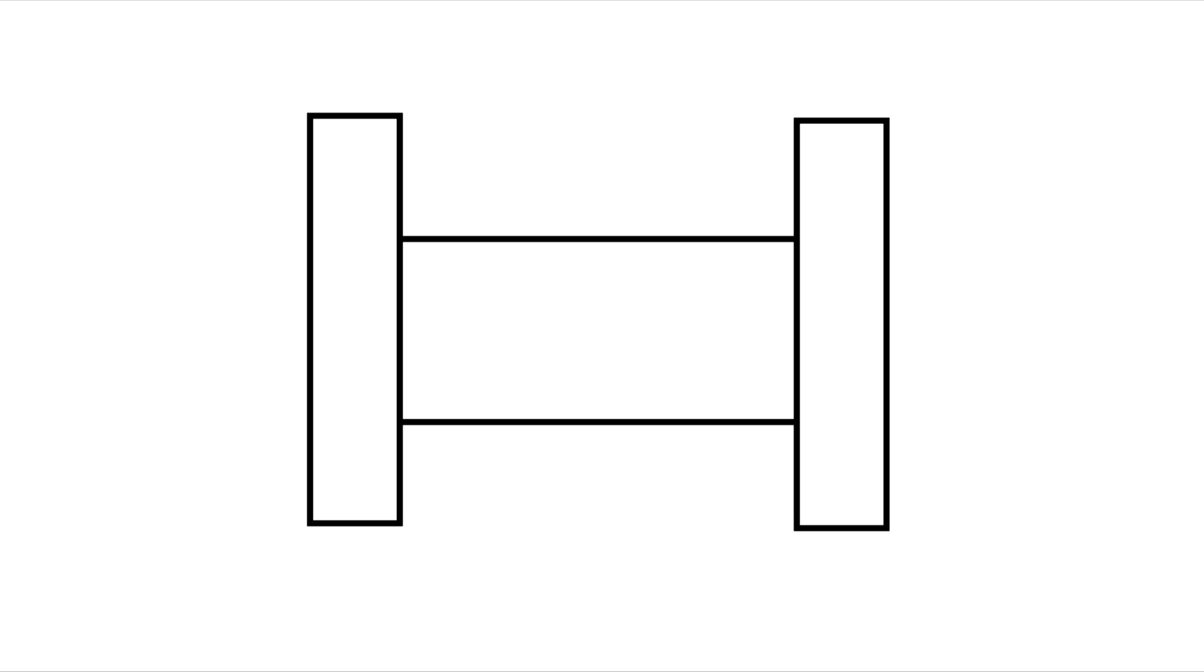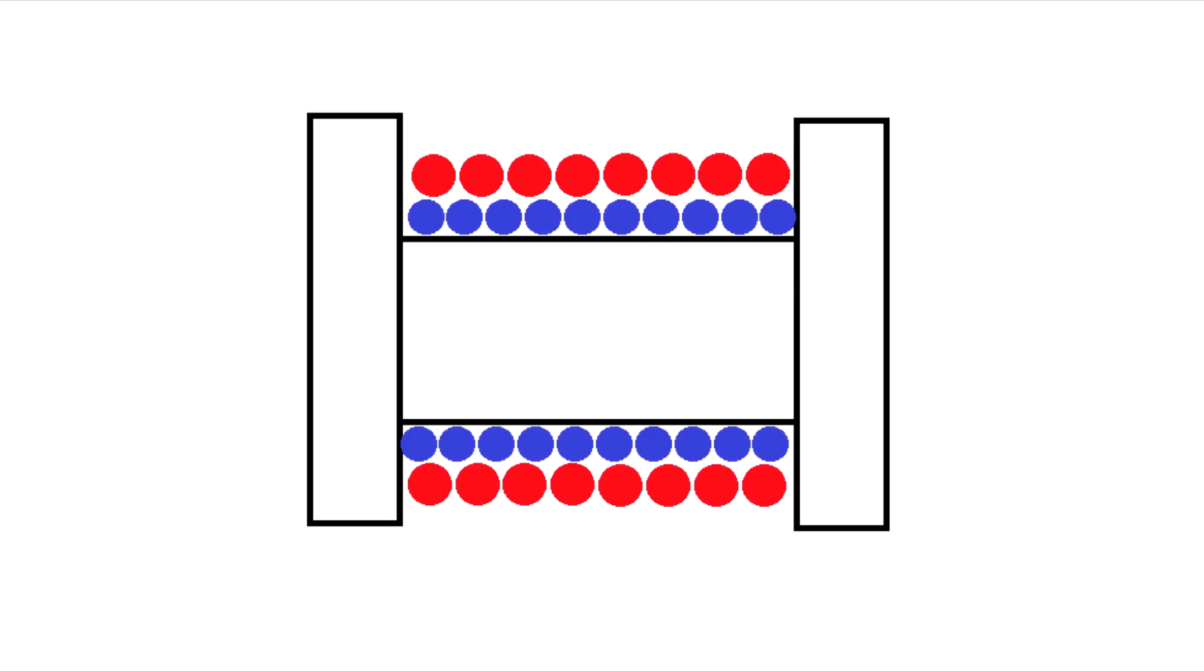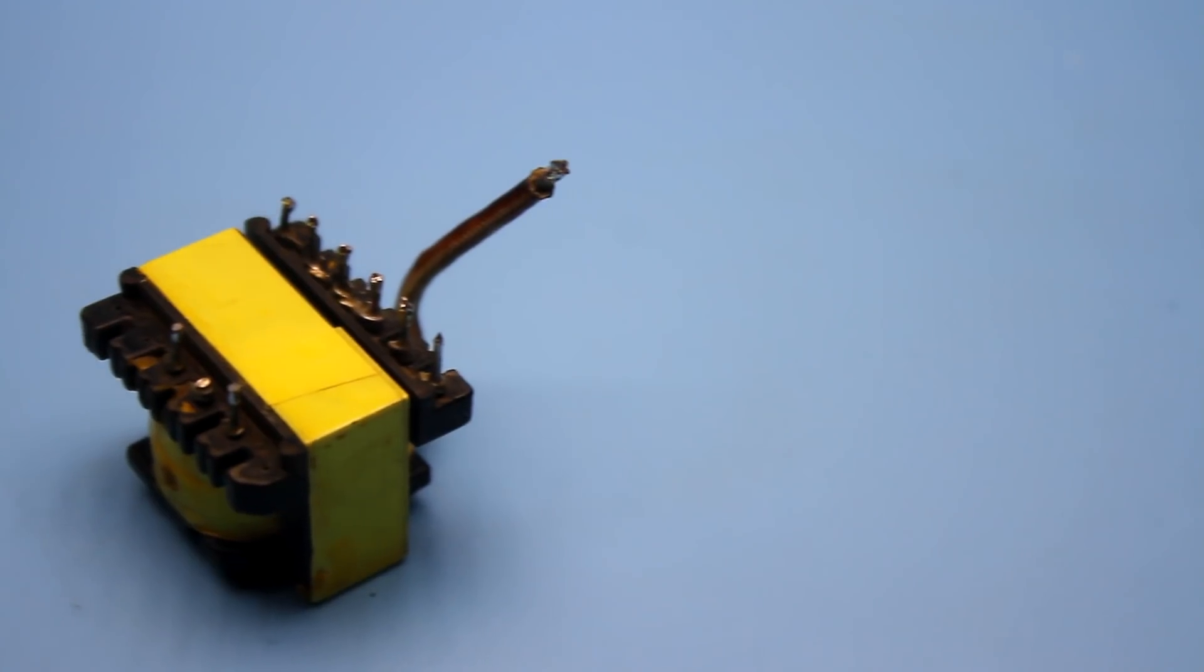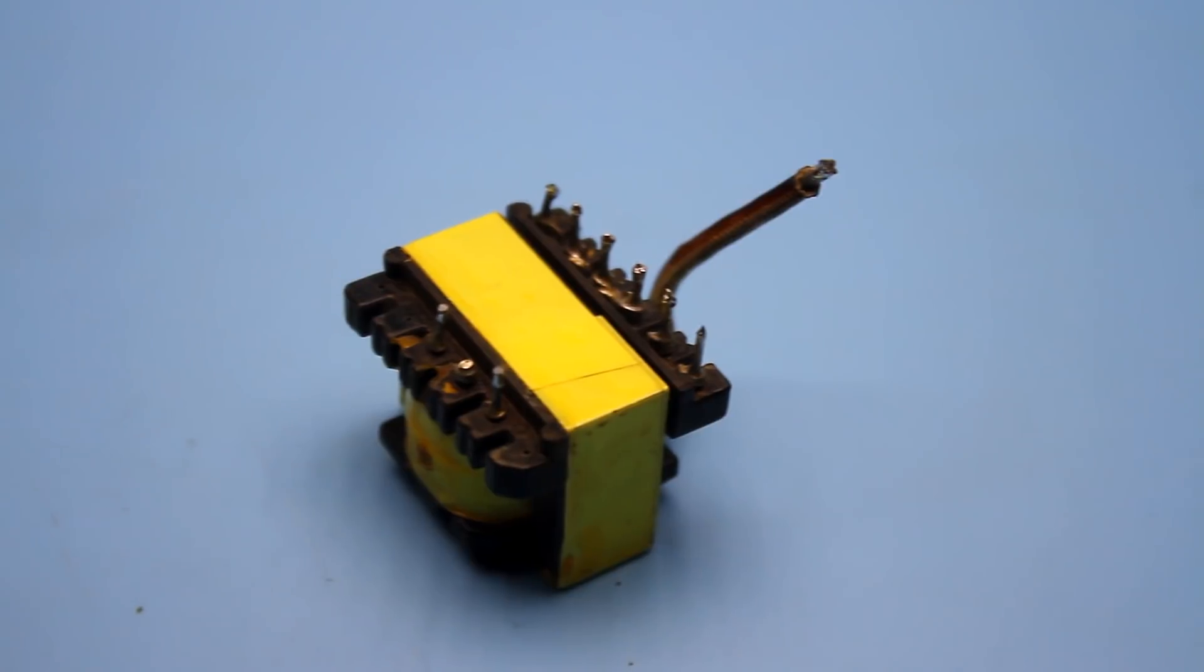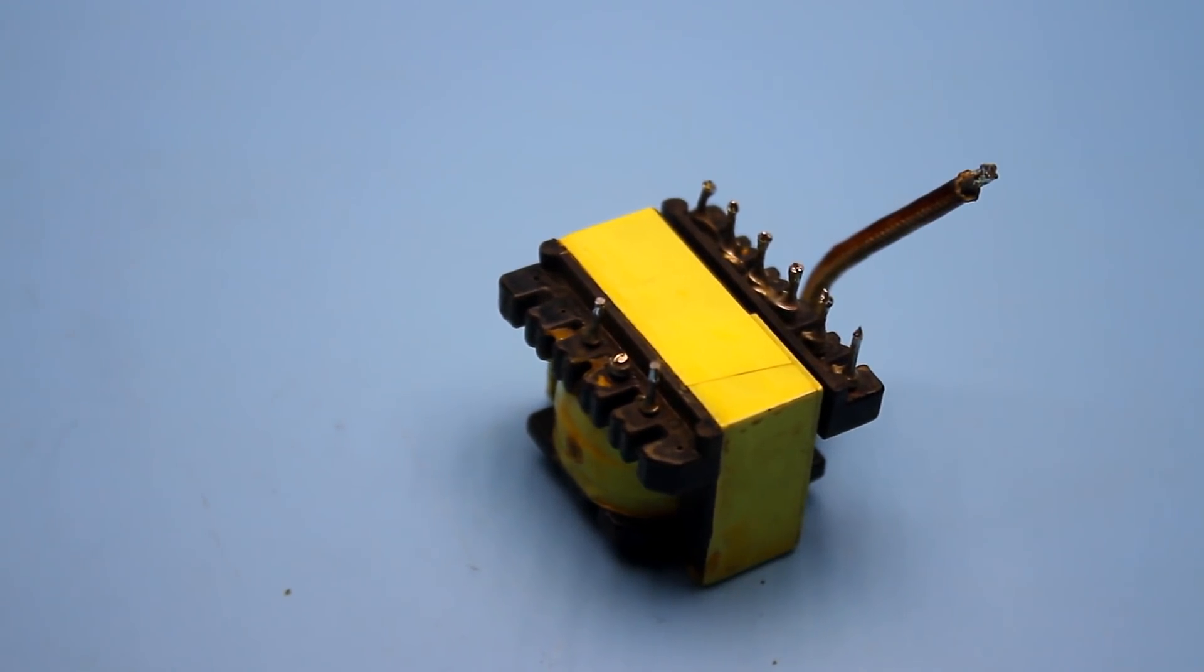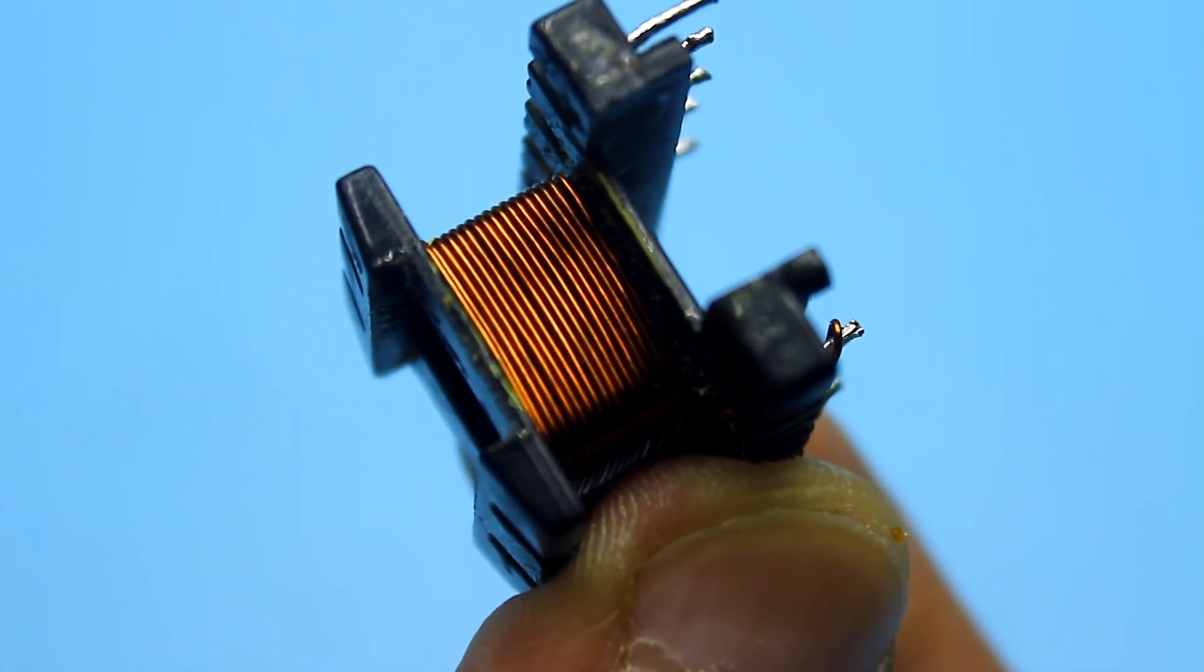First, on the bare frame, we must wind half of the primary winding, then the secondary one entirely, and over that the second half of the primary, as it is done in the transformers of computer power supply. But I prefer not to bother, so I fully wind up the primary and over that the secondary.